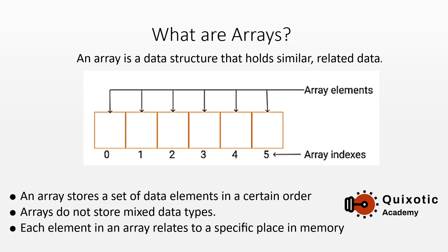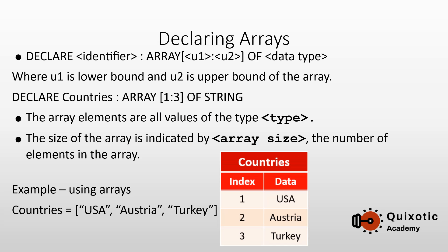An array of student ages would store integer data — such as 18, 17, whatever the age. Each element in an array relates to a specific place in memory. Before an array can be used, it must first be declared.